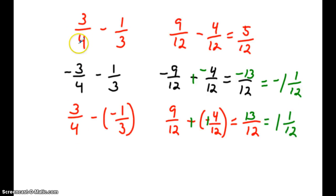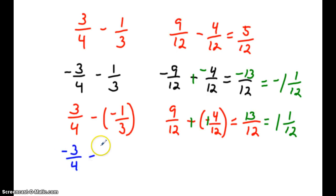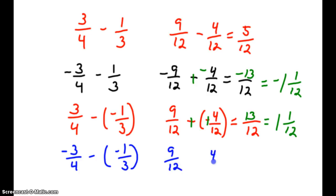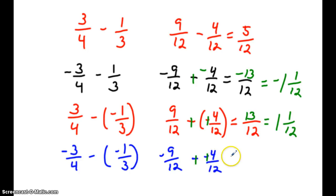Let's take a look at the recap: the original was 3 fourths minus 1 third. We then inserted a negative sign on the first fraction, and then on the second fraction. Now let's insert a negative in both fractions and see its impact. We're still dealing with 9 twelfths and 4 twelfths, still subtracting, with negative signs inserted. According to our integer rules, we add the opposite, and this will become negative 5 twelfths.